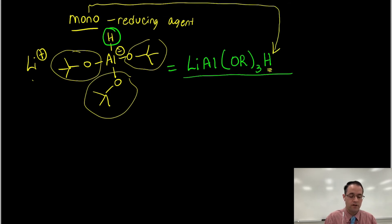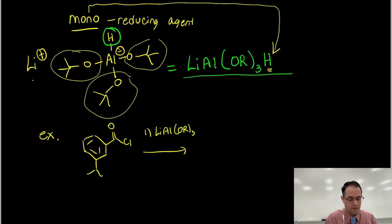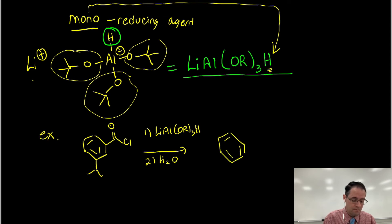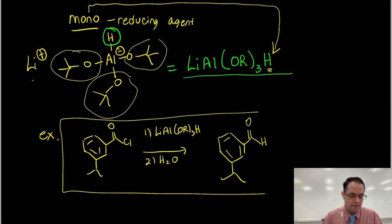As an example, if we had that acid chloride molecule and treated it with lithium tri-tert-butoxy aluminum hydride followed by water workup instead of LiAlH4, you stop at the aldehyde. On paper it works great, but in practice results may vary. That's reaction number four.